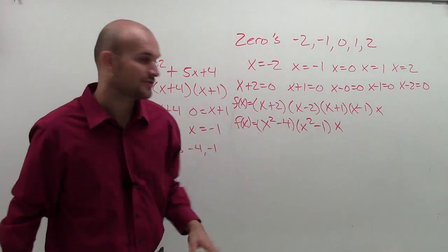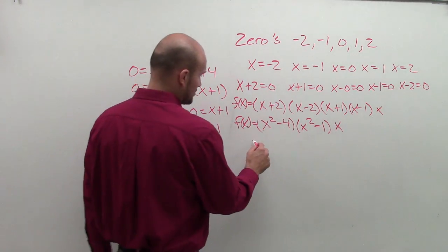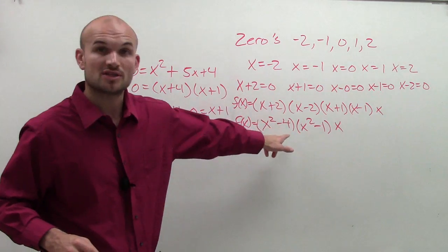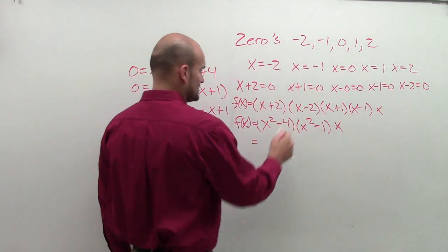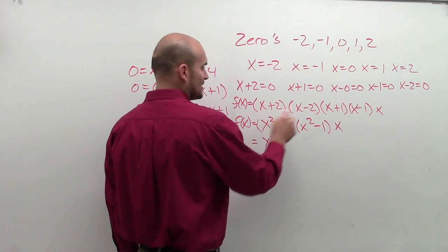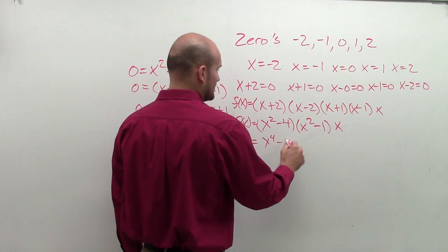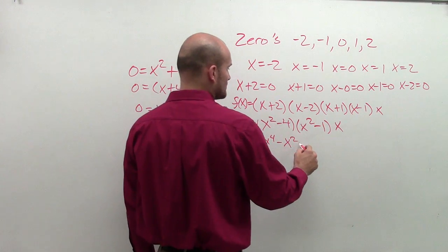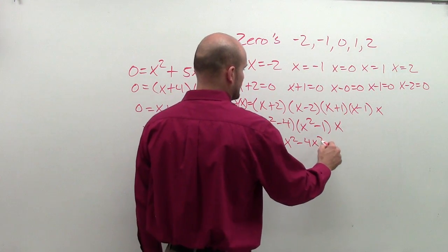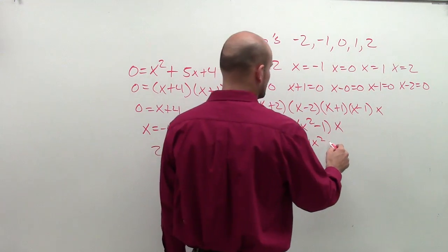So now, I'm going to have to use foil, or just to multiply the binomials, to multiply these two binomials. So x squared times x squared is x to the fourth. x squared times negative 1 is negative x squared. Negative 4 times x squared is negative 4x squared. And negative 4 times negative 1 is positive 4.